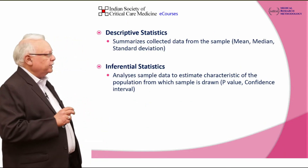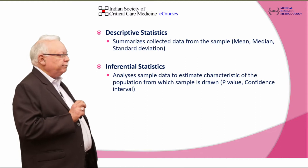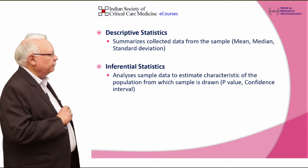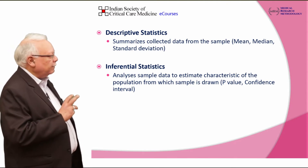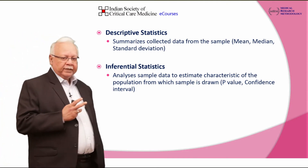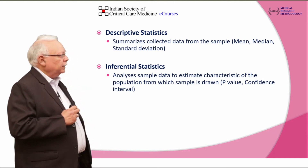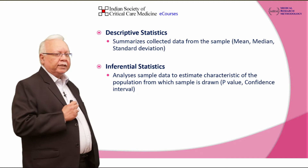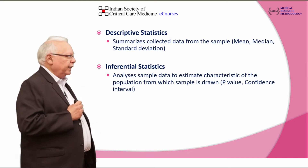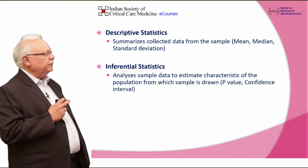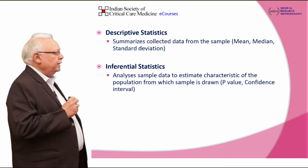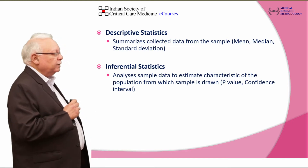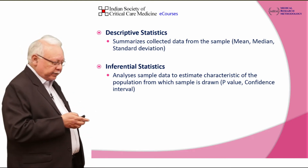Now there are two kinds of statistics. One is descriptive statistics — that means whenever we collect data, we summarize the data: we have mean, median, standard deviation. The other is inferential statistics, which means that whenever we analyze sample data to estimate characteristics of the population from which that sample is drawn, that becomes inferential statistics.